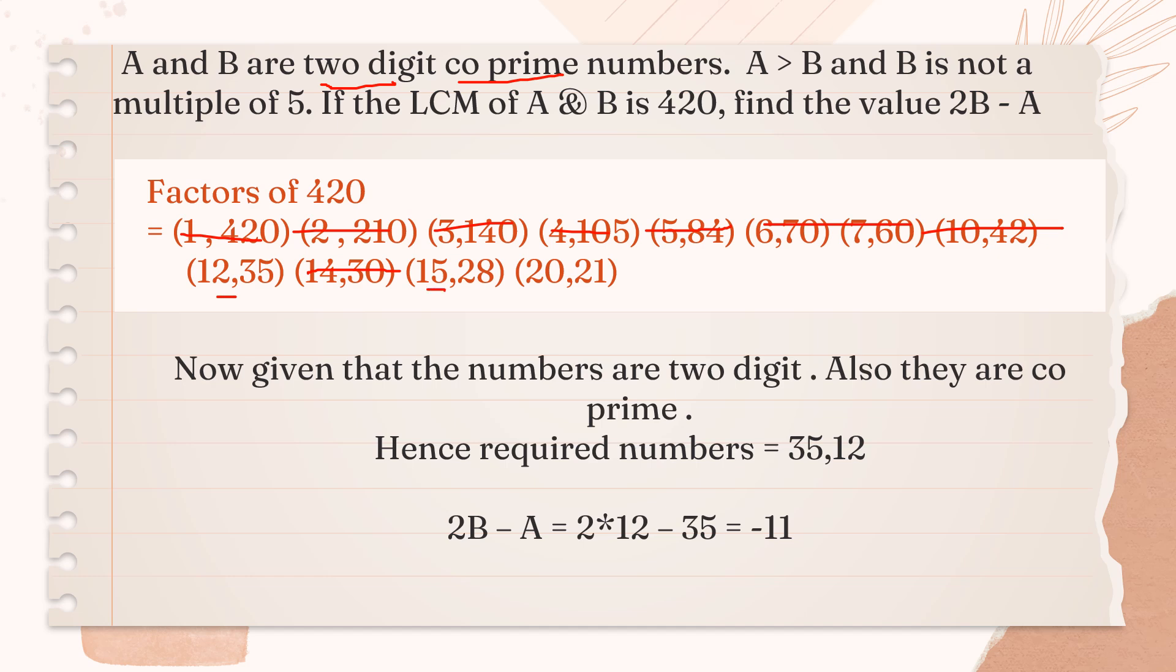12 and 35, 15 and 28, and 20 and 21. Now, this is saying that A is greater than B. B being the smaller one is not a multiple of 5.